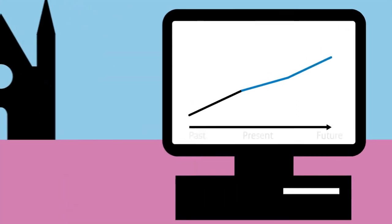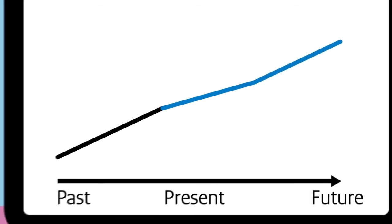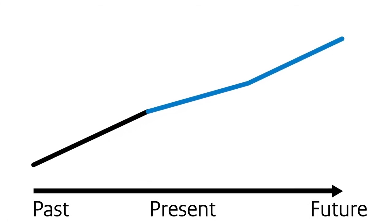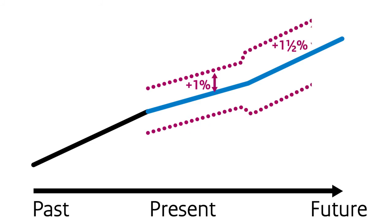In normal circumstances, the margin of error is around plus or minus 1% for projections of the current year, and around plus or minus 1.5% for those of the following year.